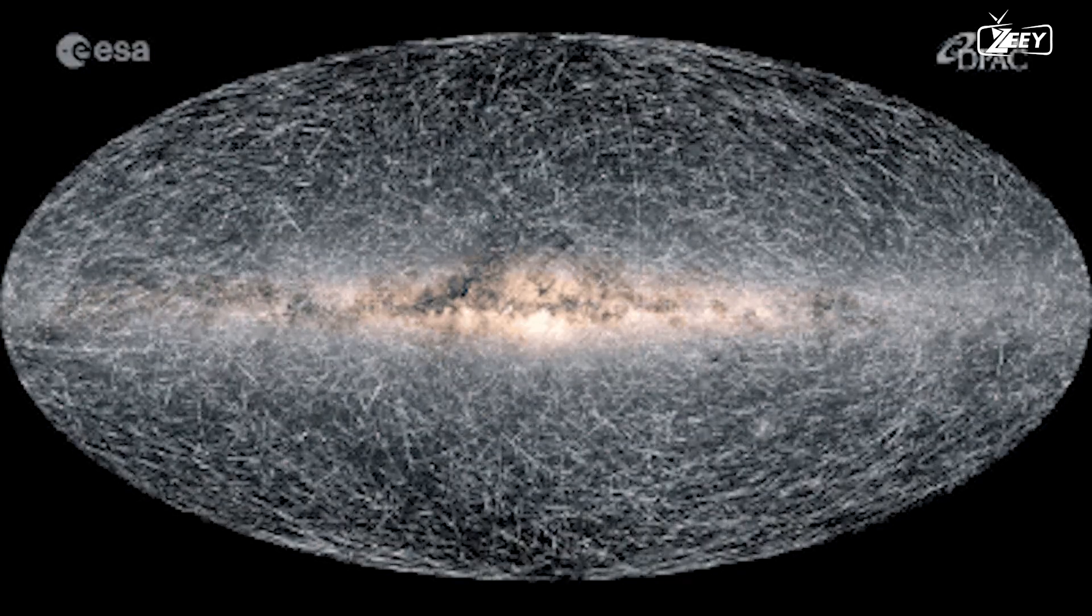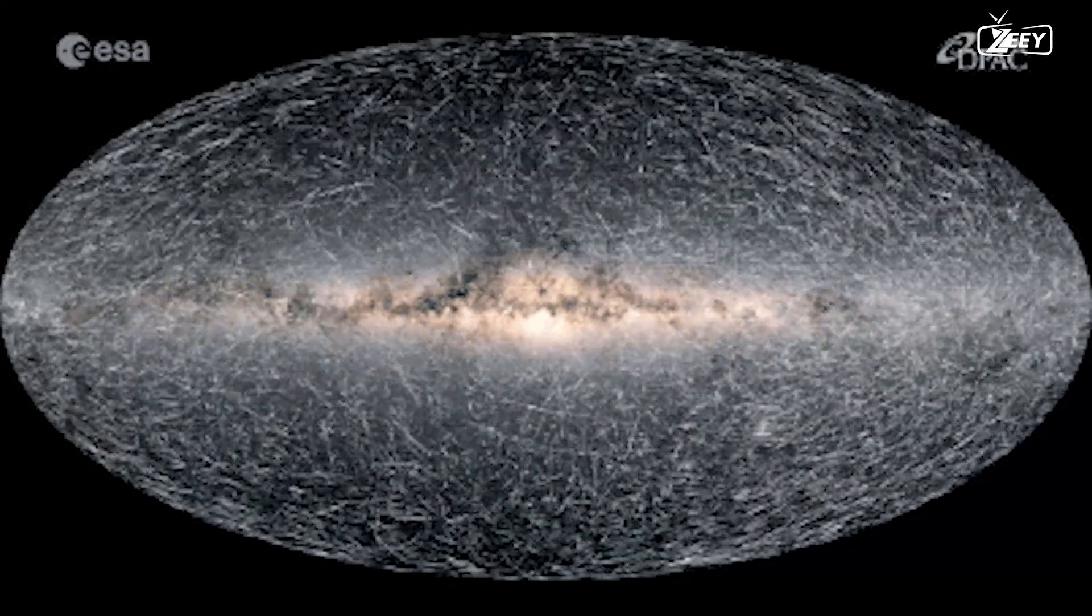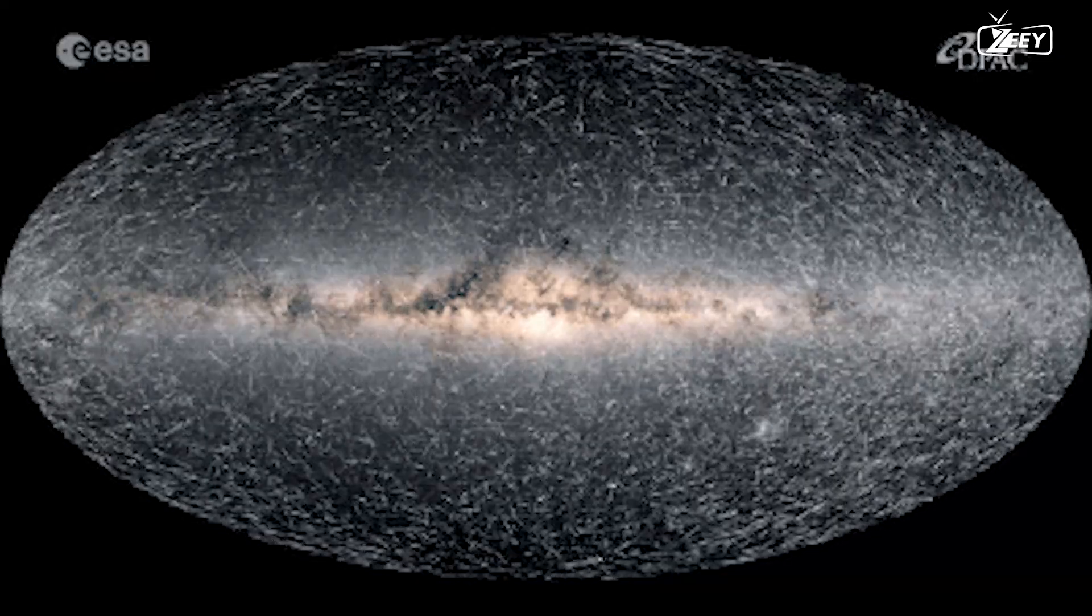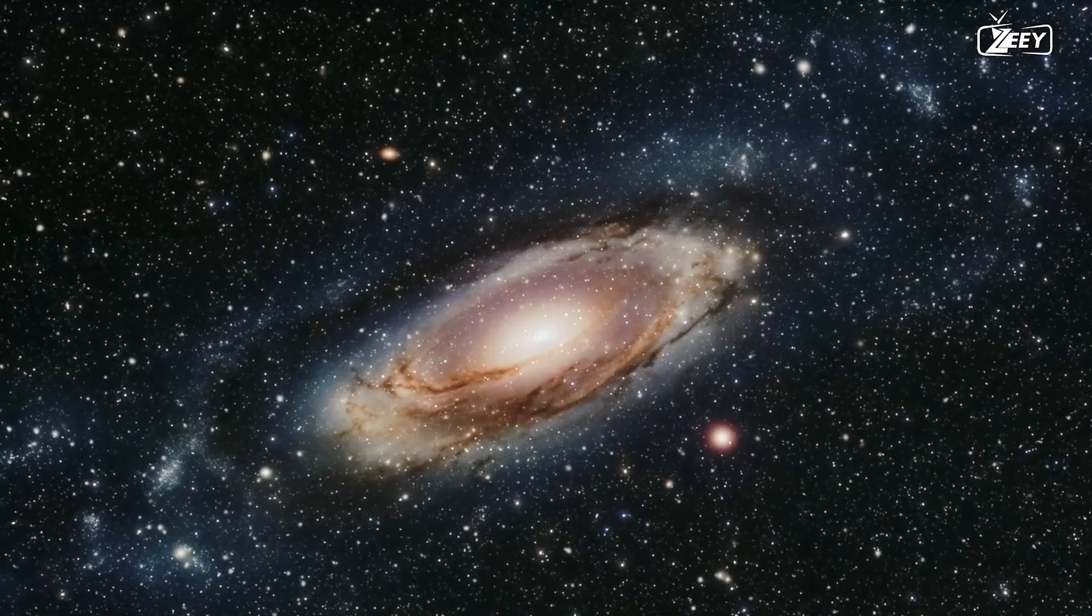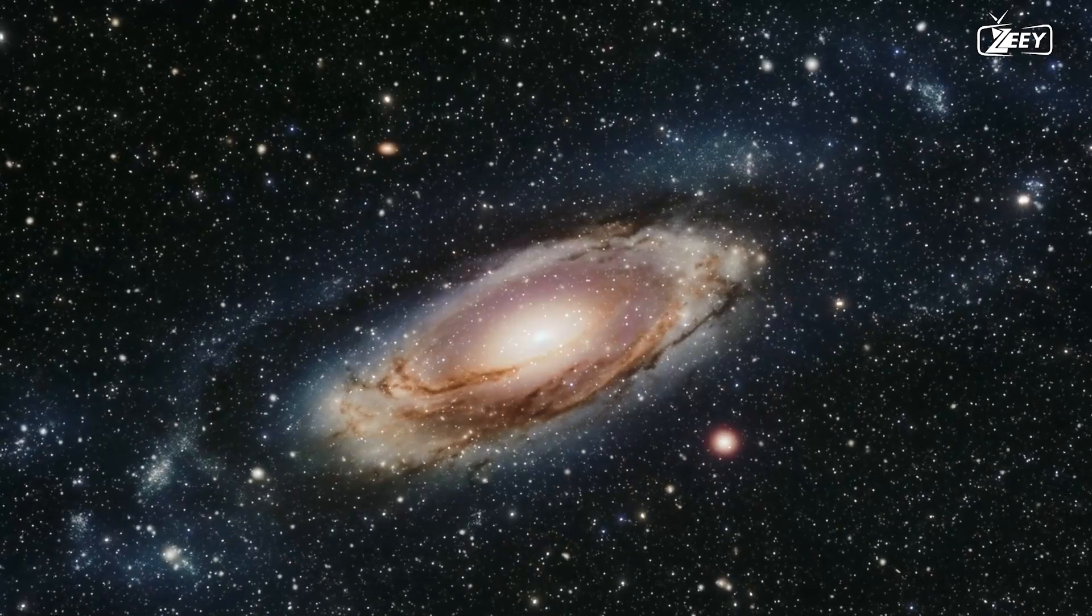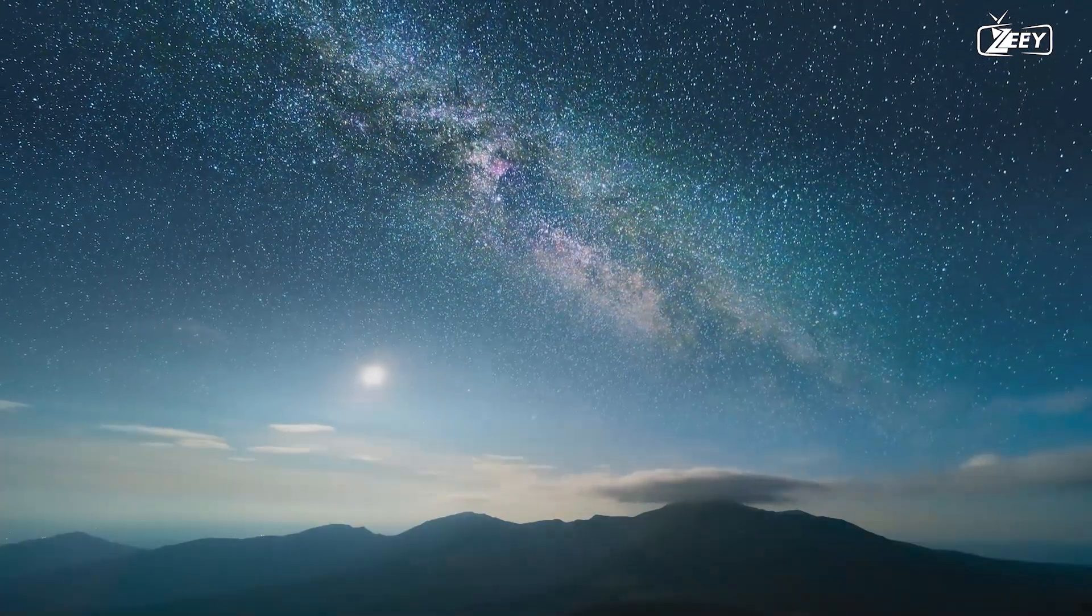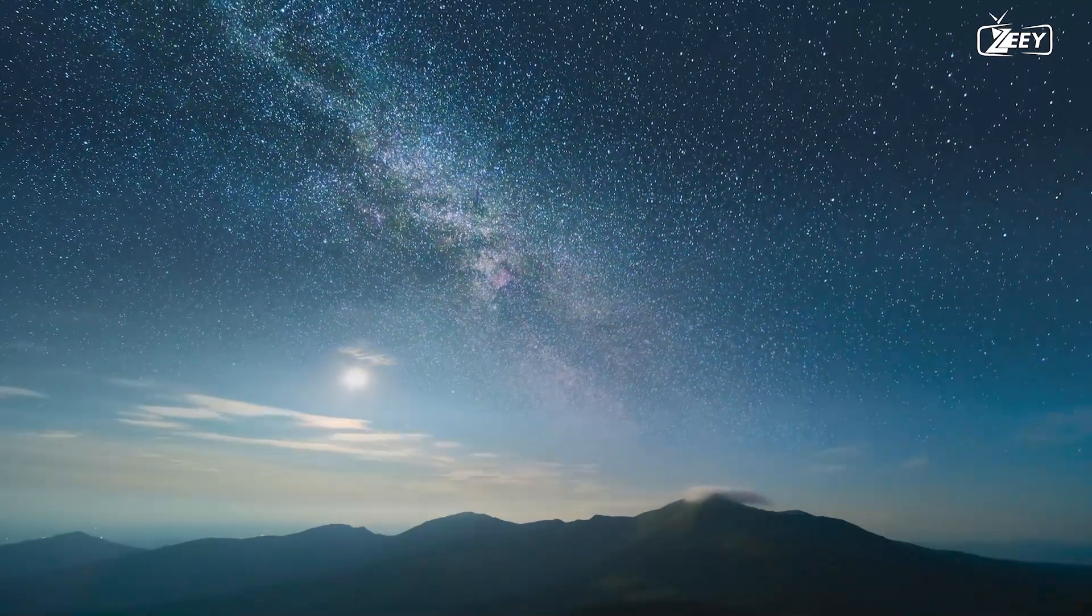Gaia enables astronomers to study the Milky Way as a whole, tracing its structure, dynamics, and evolution. It helps reveal the overall structure of the galaxy, including the distribution of stars, the arrangement of spiral arms, and the nature of the galactic bulge and halo. This perspective helps refine our comprehension of our position within the Milky Way and how our galaxy fits into the broader context of the local universe.